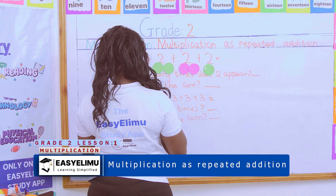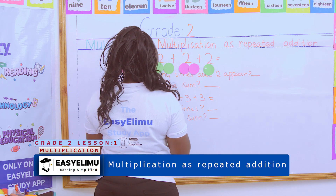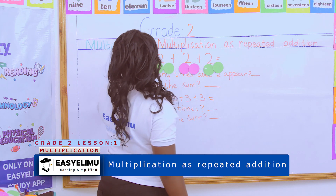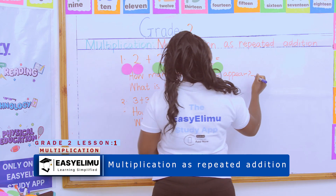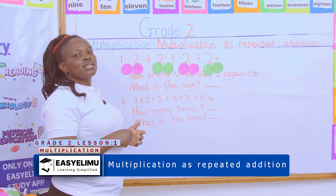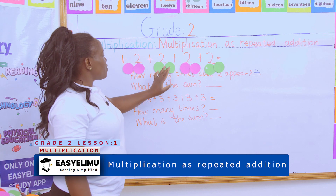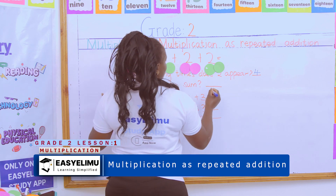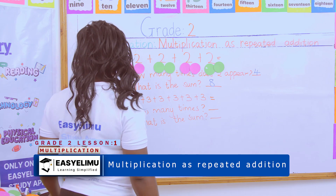So you have been asked how many times does two appear, and you've counted and found out that two is appearing four times. But now, what is the sum? We said the meaning of the word sum is to add. So I will say one, two, three, four, five, six, seven, eight — so the sum of two plus two plus two plus two is eight.